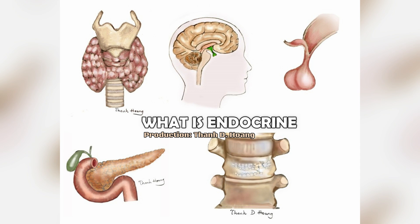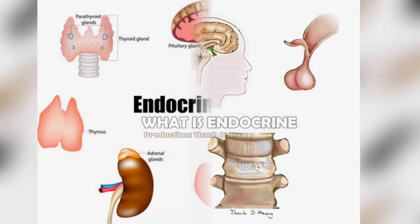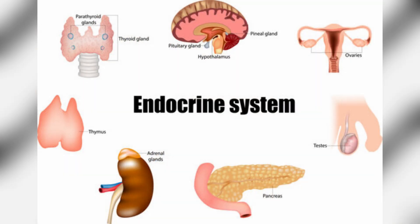What is endocrine? Endocrine glands include the hypothalamus, pituitary, thyroid, parathyroid gland, adrenals, pancreas, ovaries, testes, and pineal.